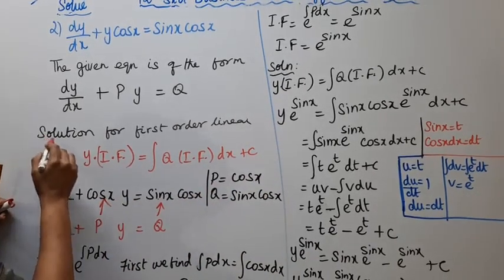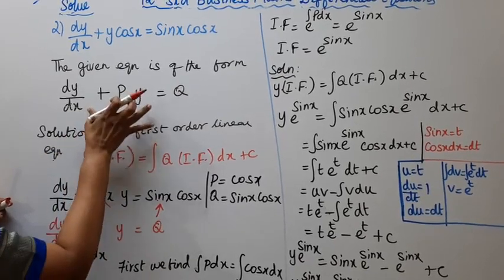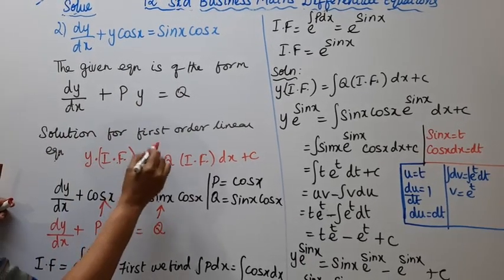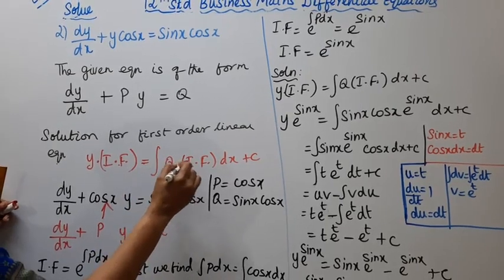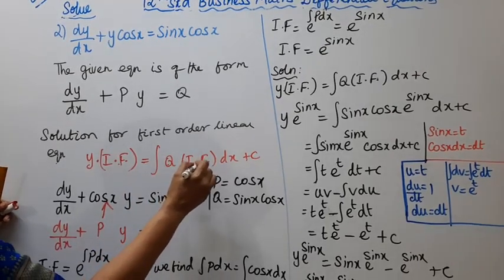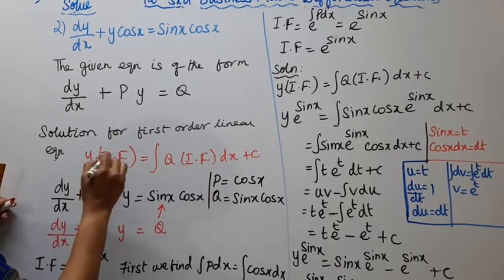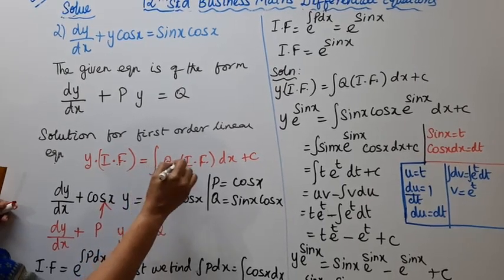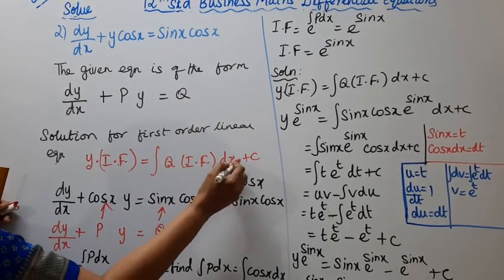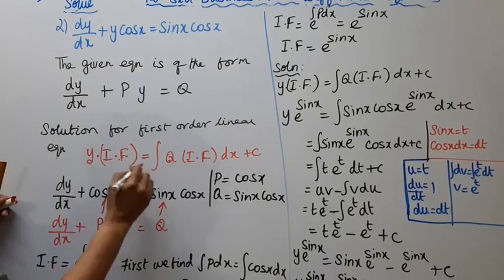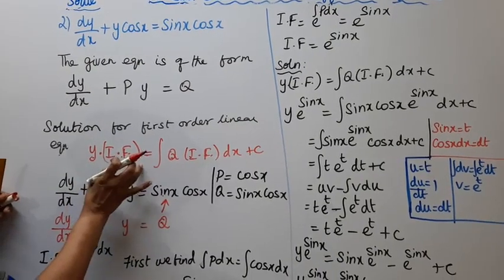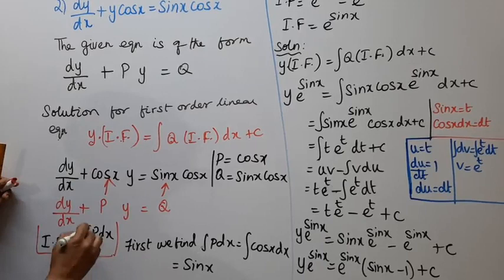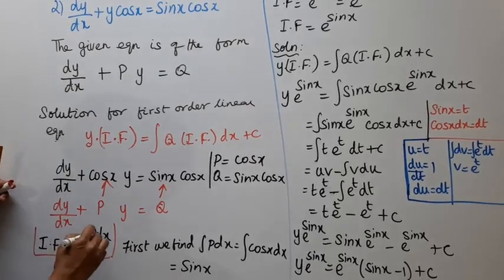Now let's find the solution. For a first order linear equation, y × (integrating factor) = integration of Q × (integrating factor) dx + c. The integrating factor is e raised to the power of ∫P dx.